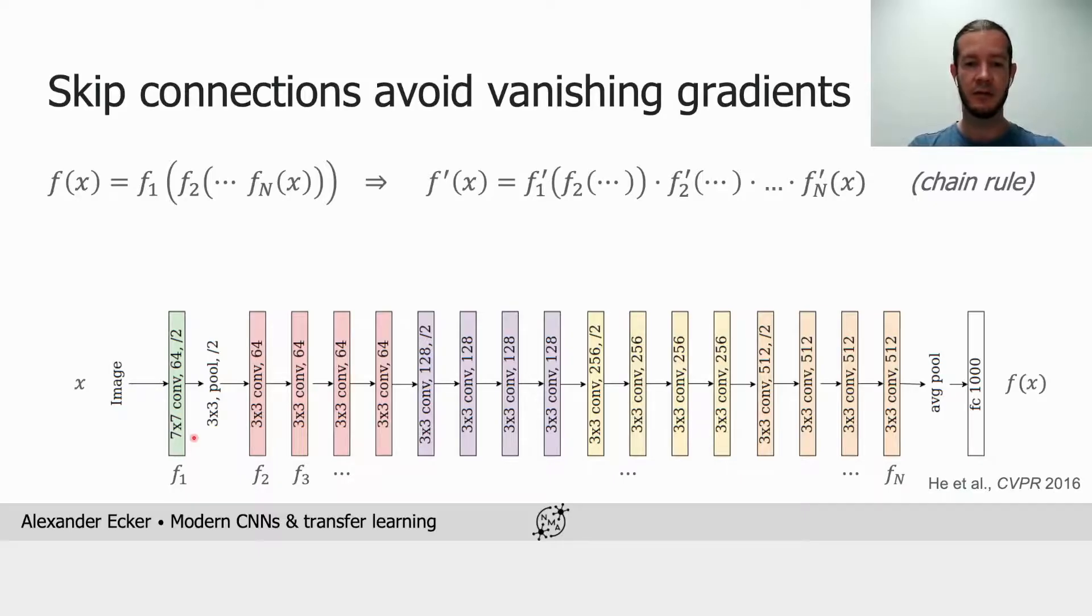Now, if these derivatives are on average greater than 1, they will grow exponentially and training will diverge. On the other hand, if they are on average smaller than 1, they will shrink exponentially toward 0, and the learning signal, which is based on the gradient, will not reach the early layers.